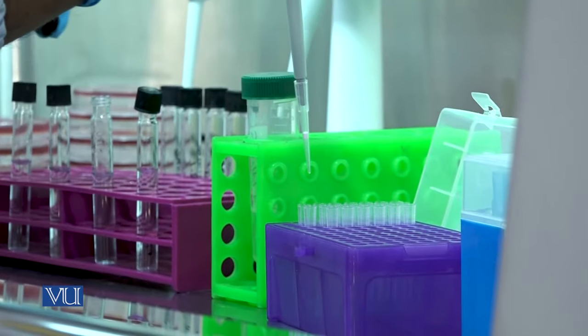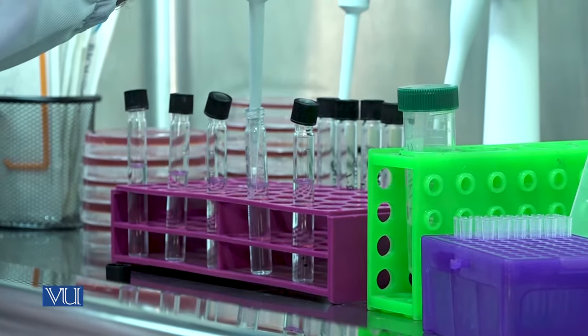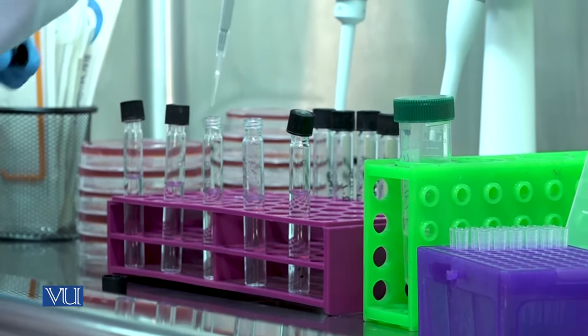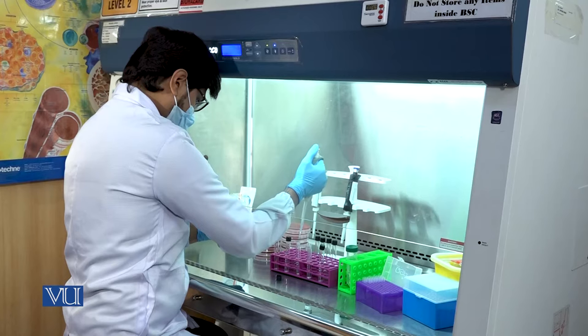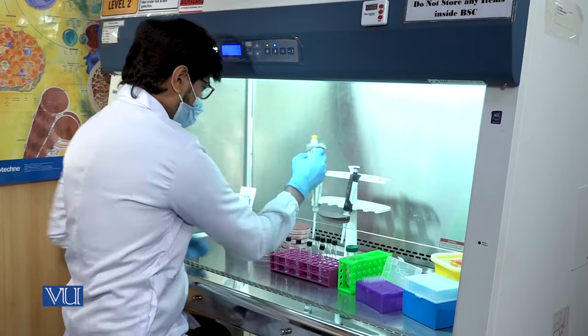For making third dilution, one milliliter solution is picked from second dilution and added to the third glass tube. Discard the pipette tip and close the glass tube with the cap and mix the contents.